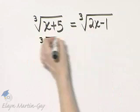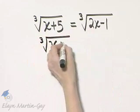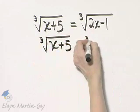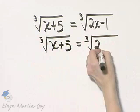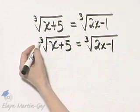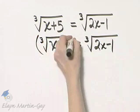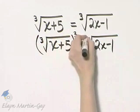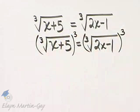Once a radical is isolated, we will use the power rule. In this case, we will cube both sides since this index is 3. So I'll cube the left side and I'll cube the right side.